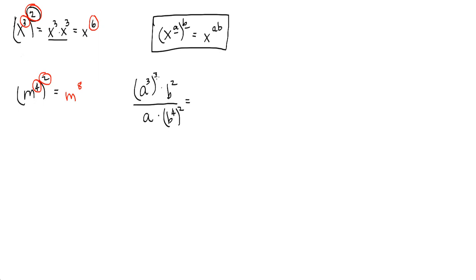Let's take a look. We've got a to the third to the third. Our rule is that we're going to multiply the exponents if we raise a power to a power. So that gives me a to the three times three, a to the ninth, times b squared over, and here we've got b to the four raised to the second. So that's four times two is b to the eighth.